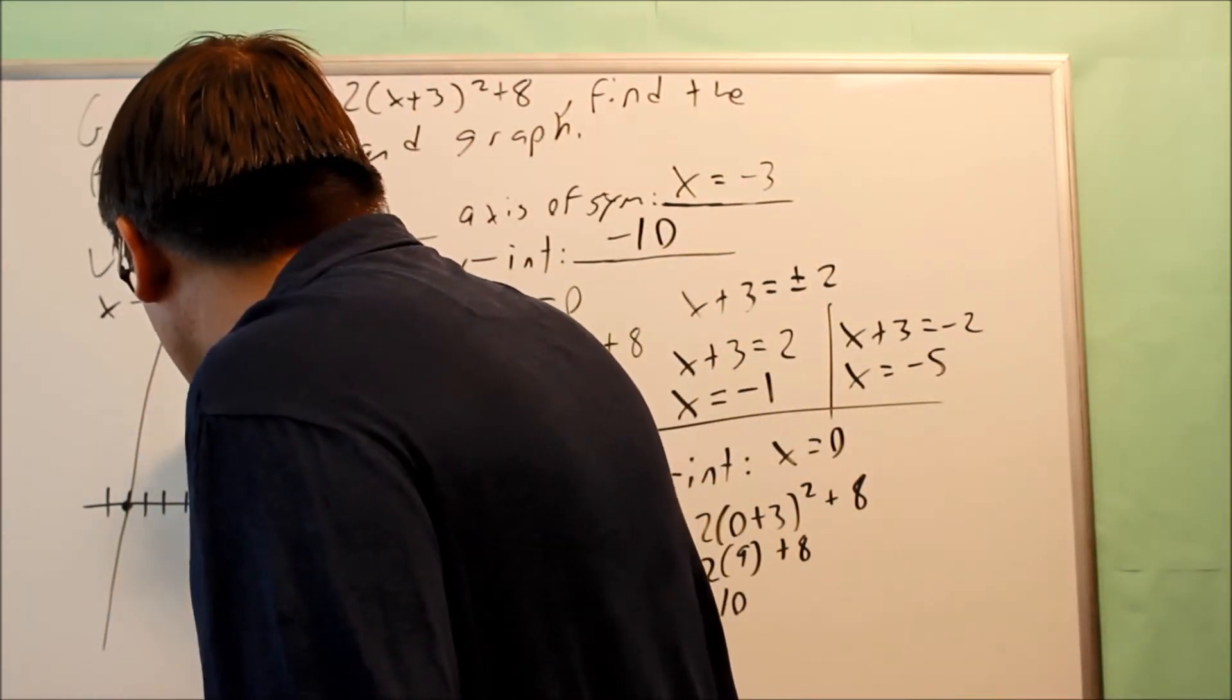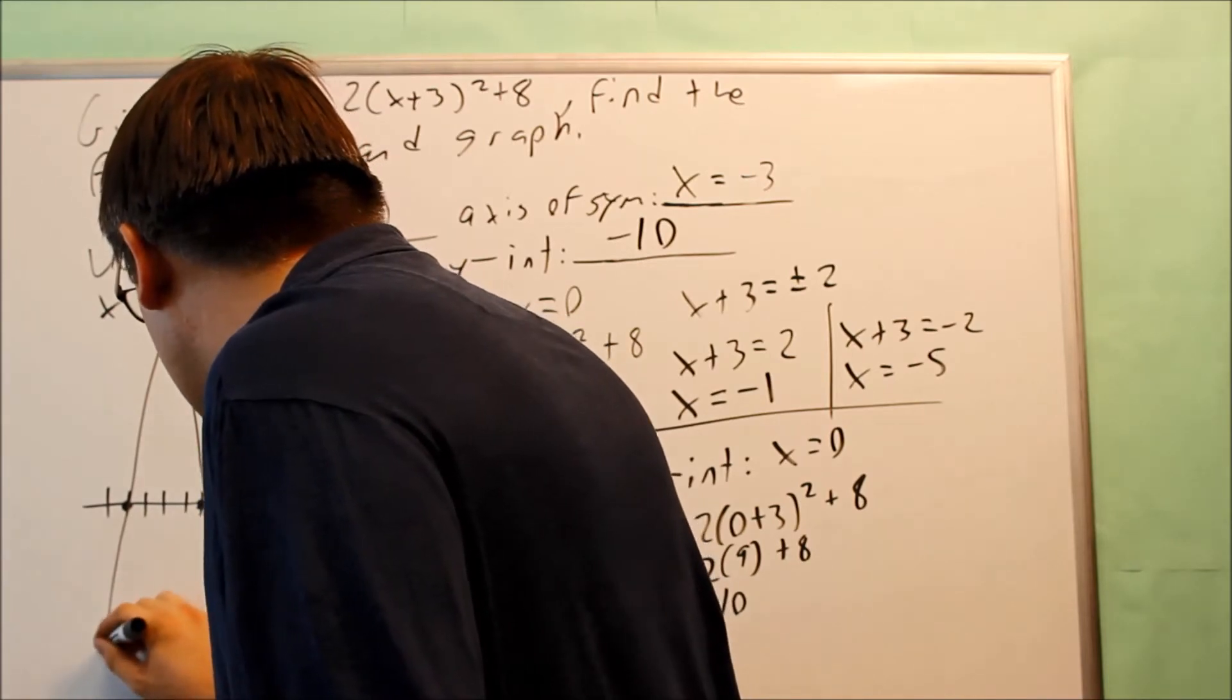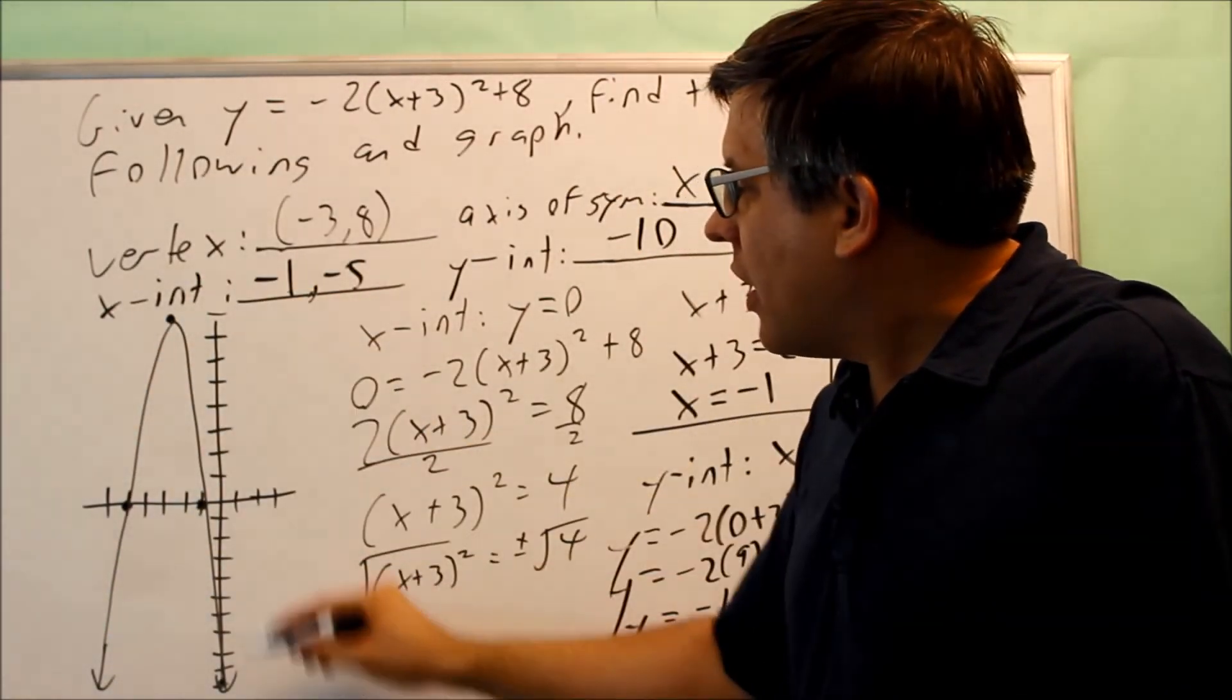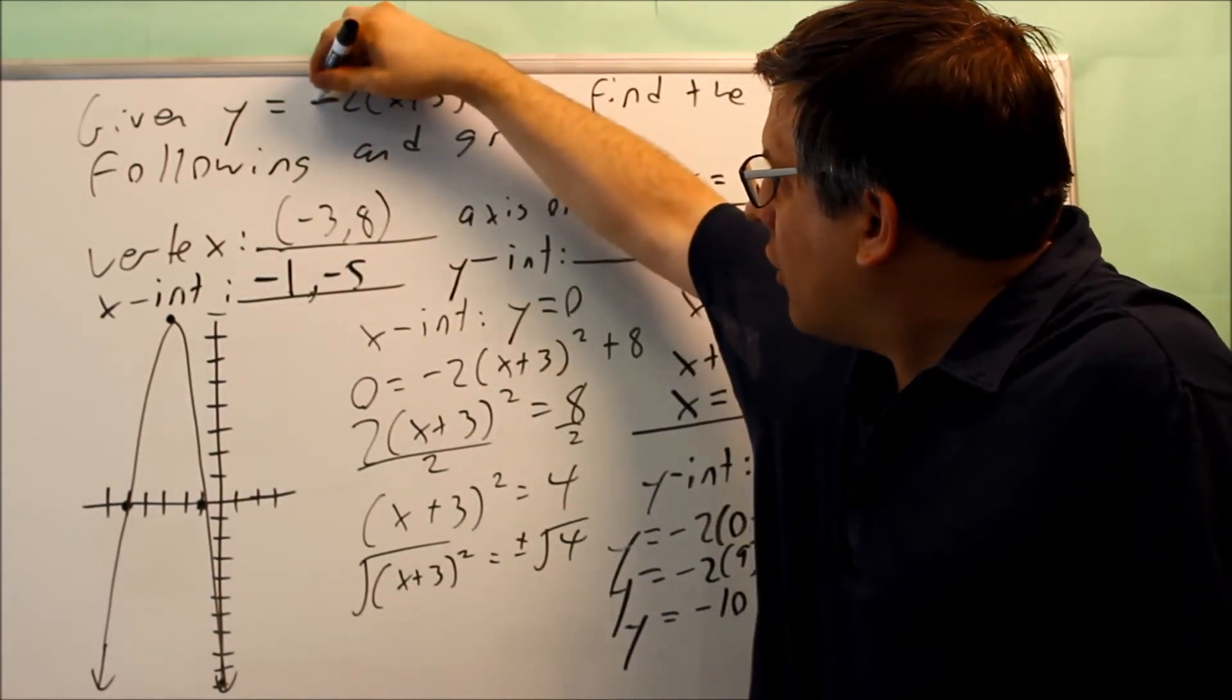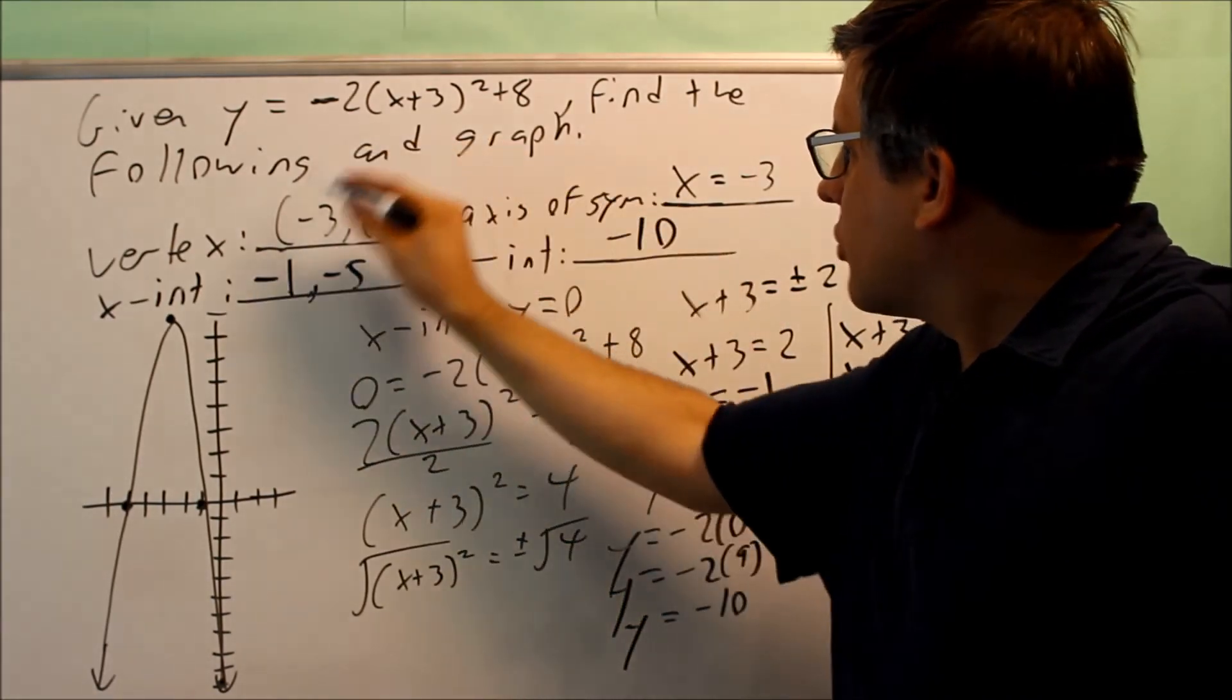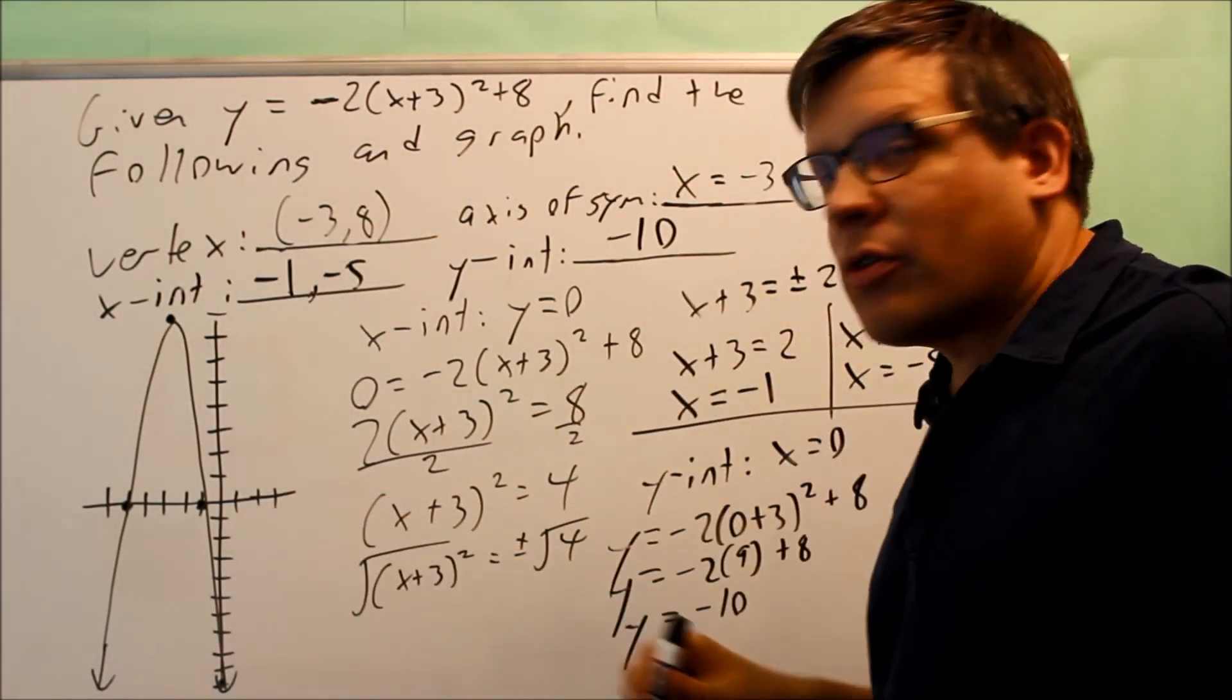So the graph itself is going to look something like this. We have an upside down parabola that's here. And again, the reason why it's opening down is because you've got a negative there in front of the square term, and that's what causes it to go upside down. So here's all the information they wanted, and we got our graph complete.